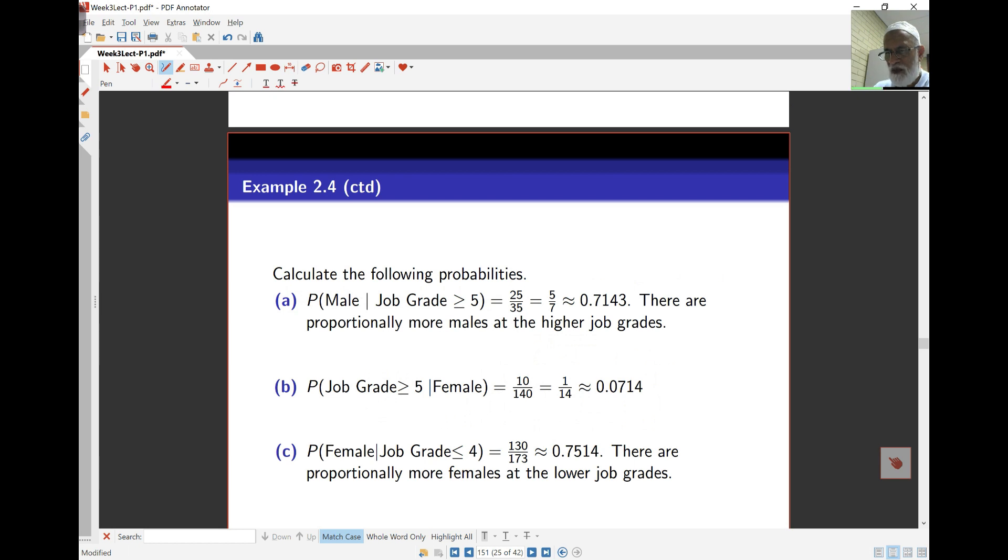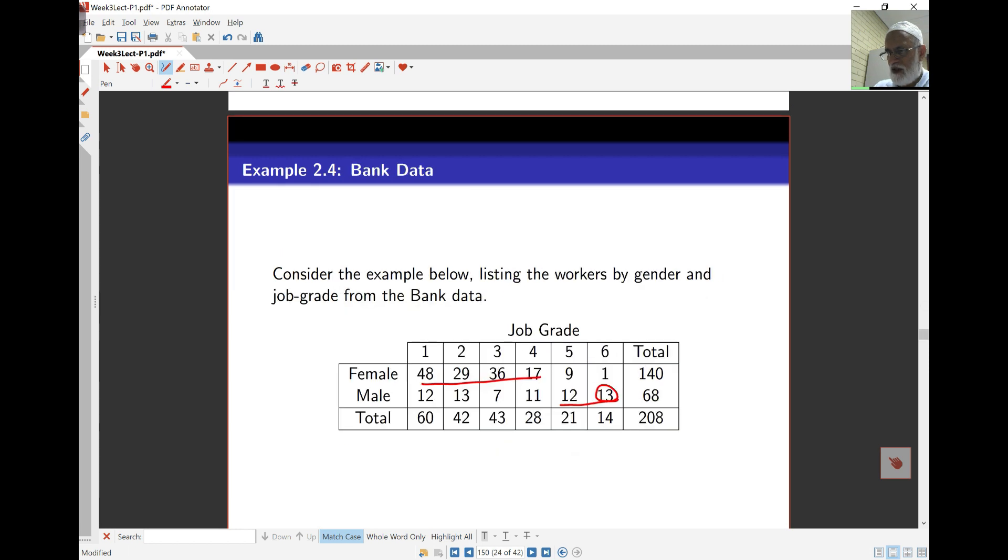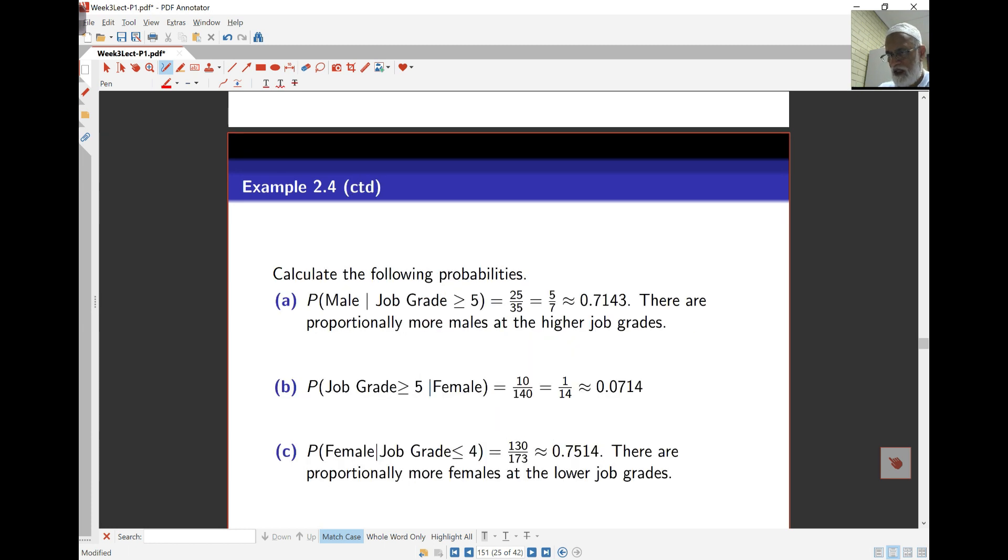So if I'm looking at the first one, probability of male given job grade is greater than or equal to 5. So my sample space is this part here now. Greater than or equal to 5. Probability being male here is 25 over the total, which is 35. And so the other ones are similar. I'll let you work through those yourself, and you can ask questions in labs or in lectures afterwards.